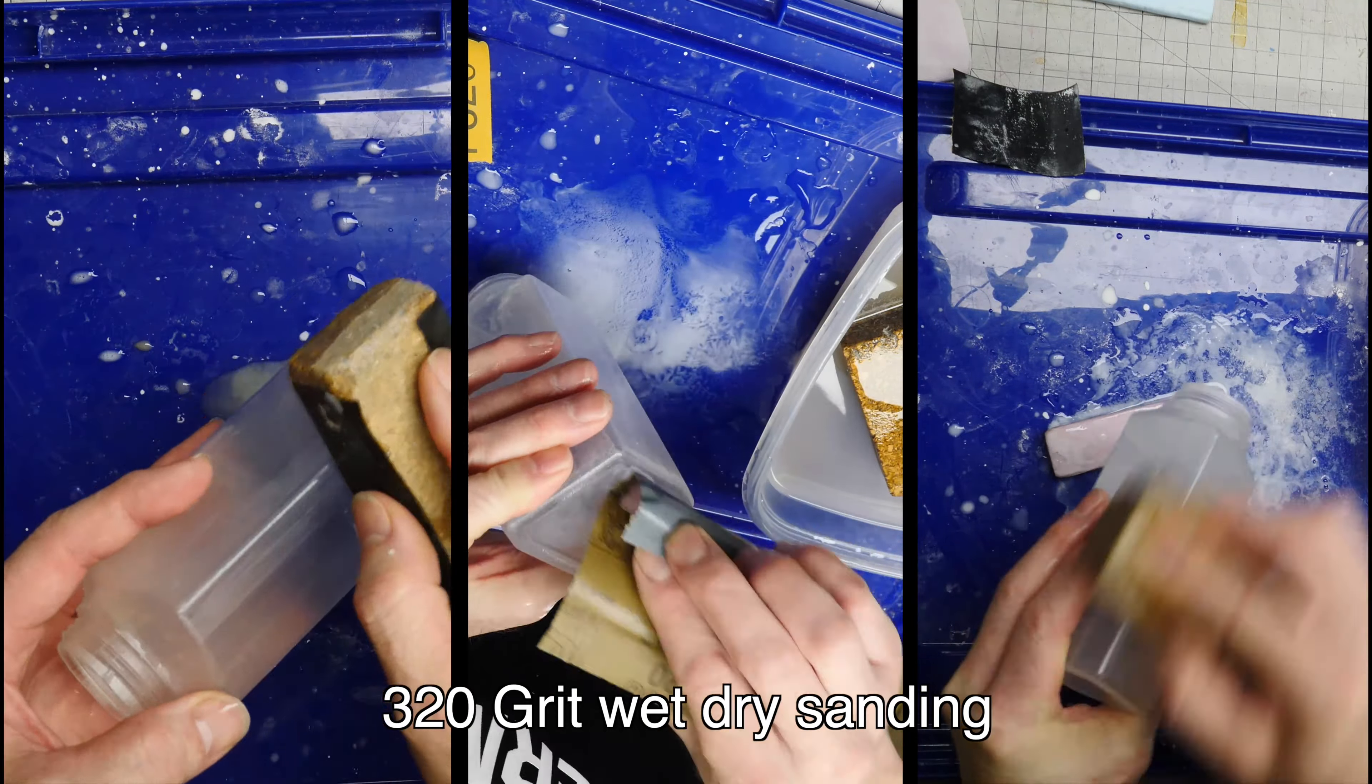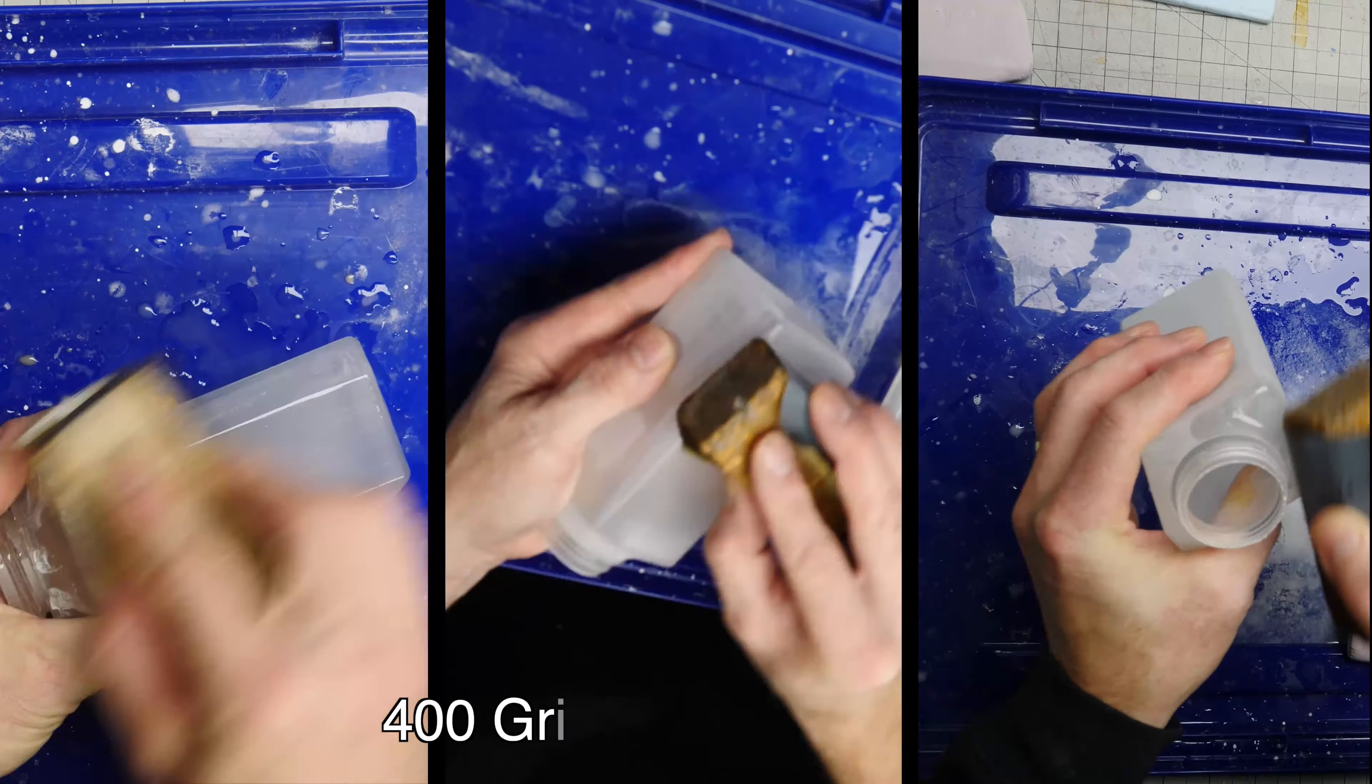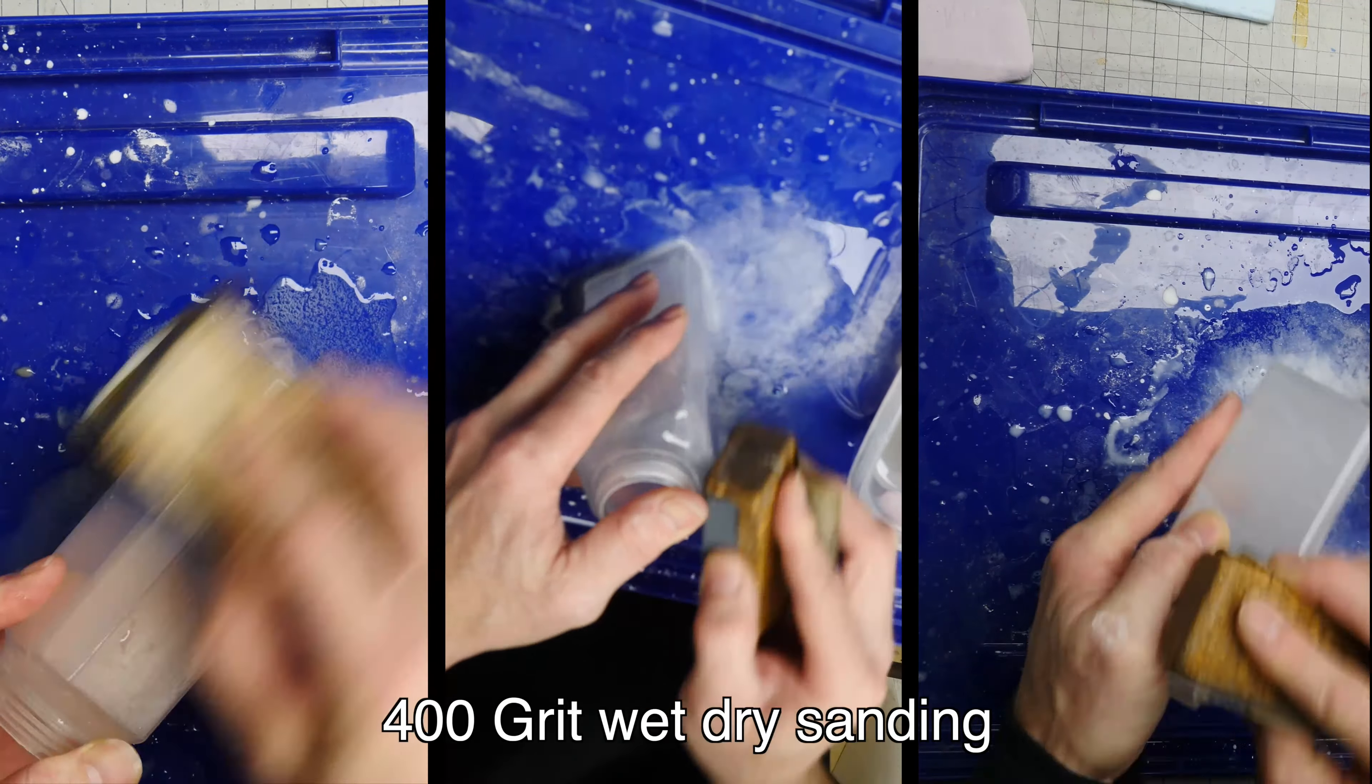I'm going to start the sanding process at 320 grit. I wet sand everything. This keeps the dust down and keeps you safe. No dry sanding. And you always, always, always use a sanding block. This gives you good surface quality.